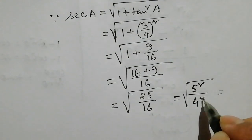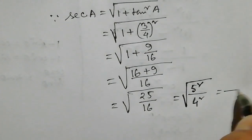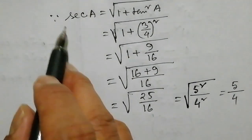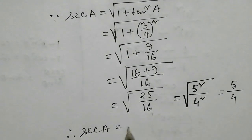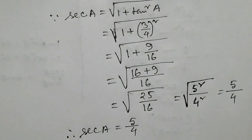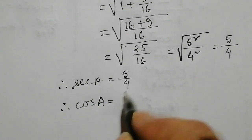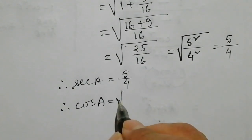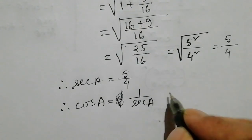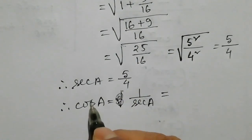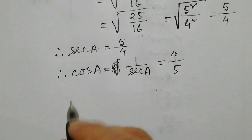Since sec A equals 5 by 4, cos A equals 1 divided by sec A, which gives cos A equals 4 by 5.